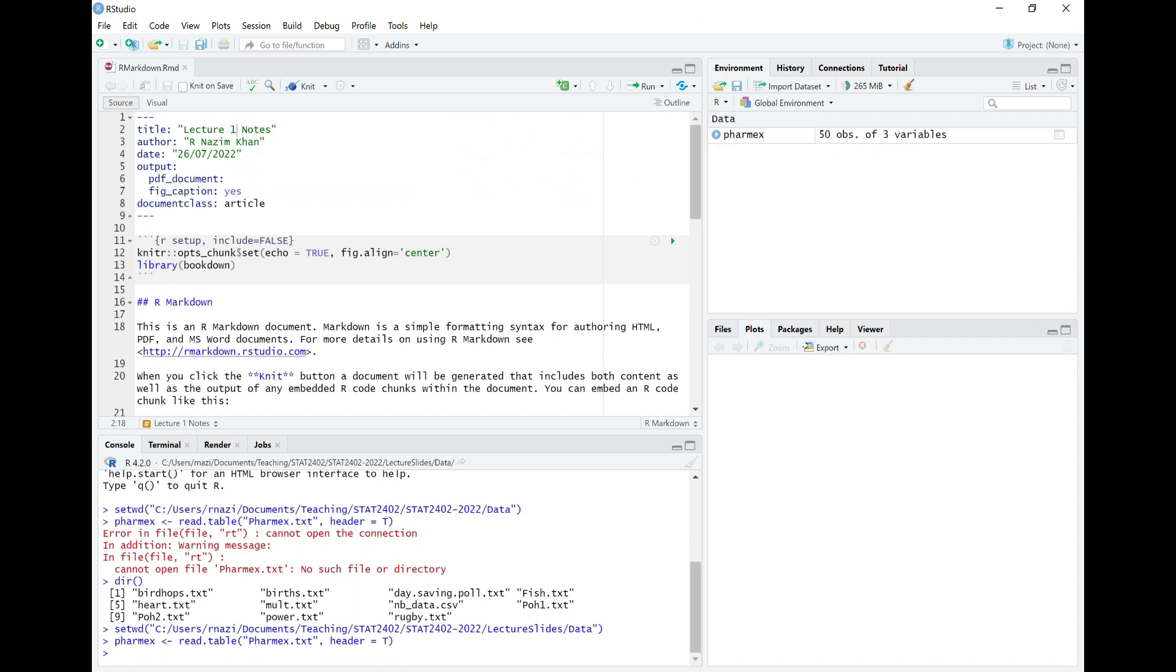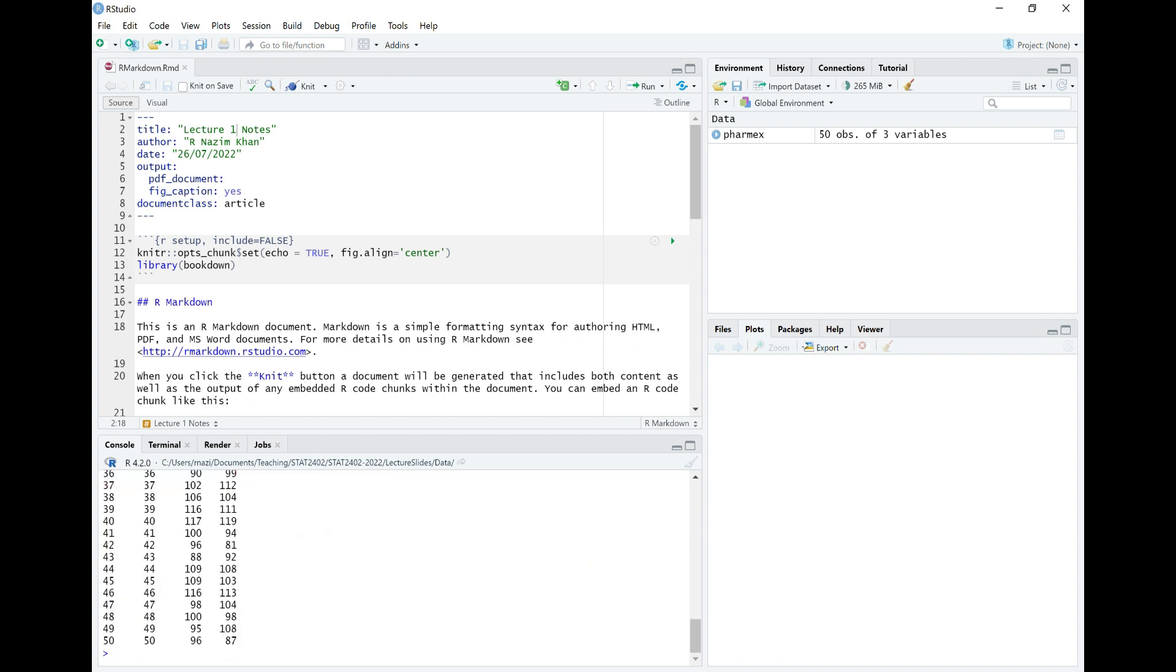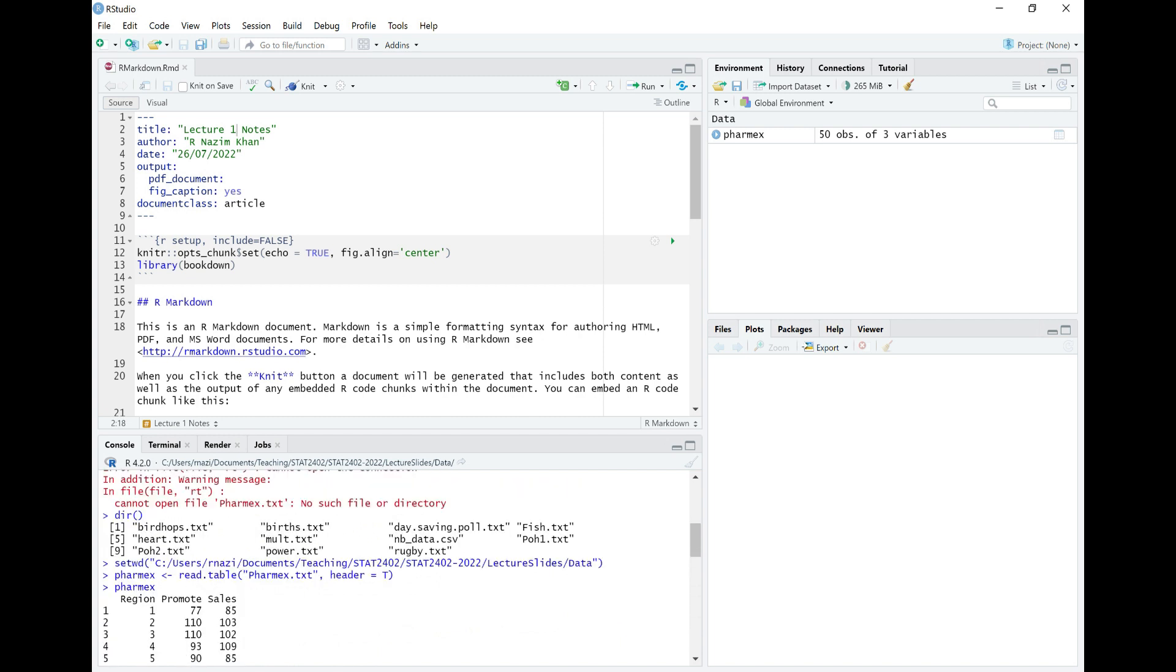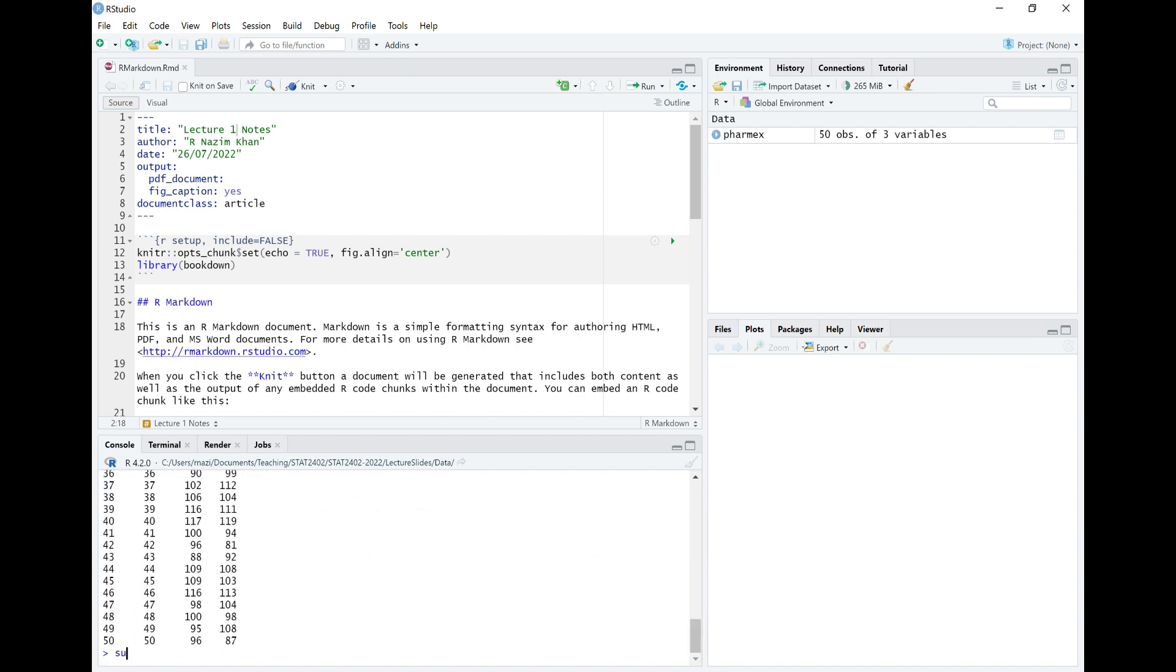So I can read my data. If I take a look at this. So you can see I've got 50 locations there. And it's got three variables. Region, which is where this store is located. Promote, which is the expenses that promote. And sales. So that's my header. These are the names of the variables.